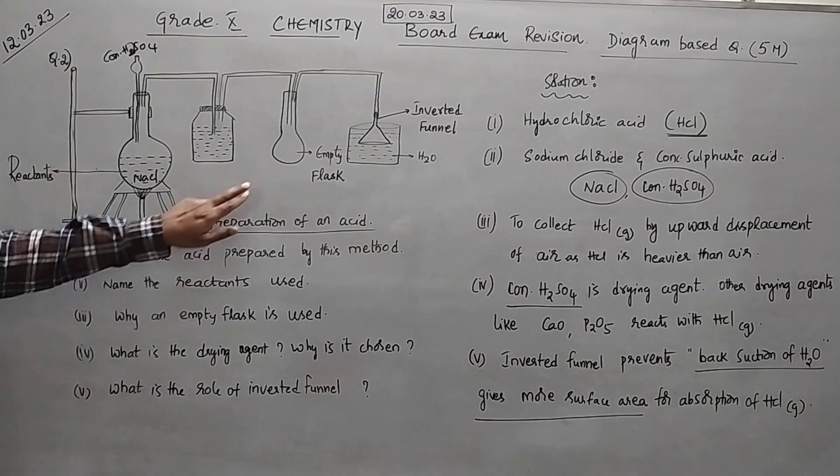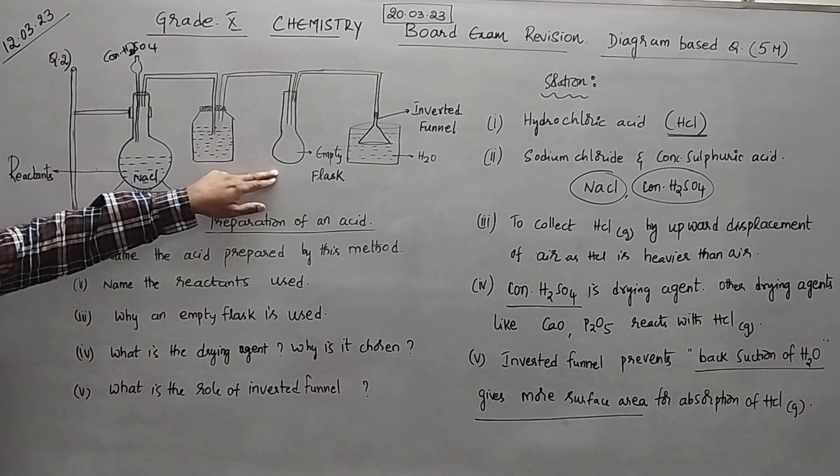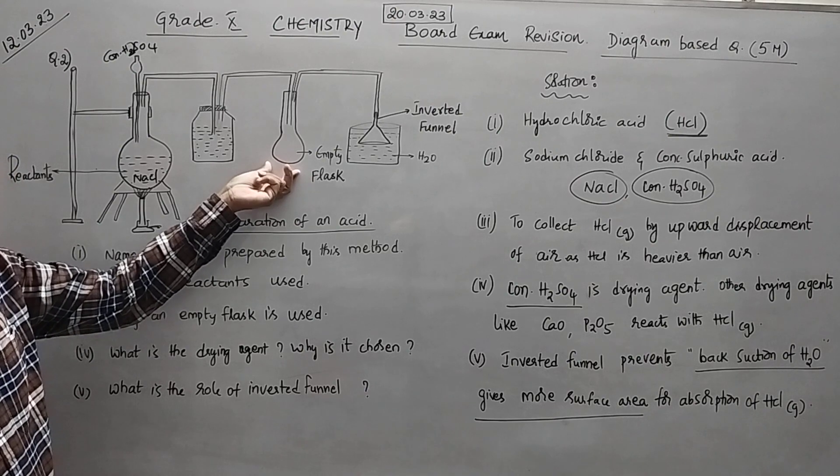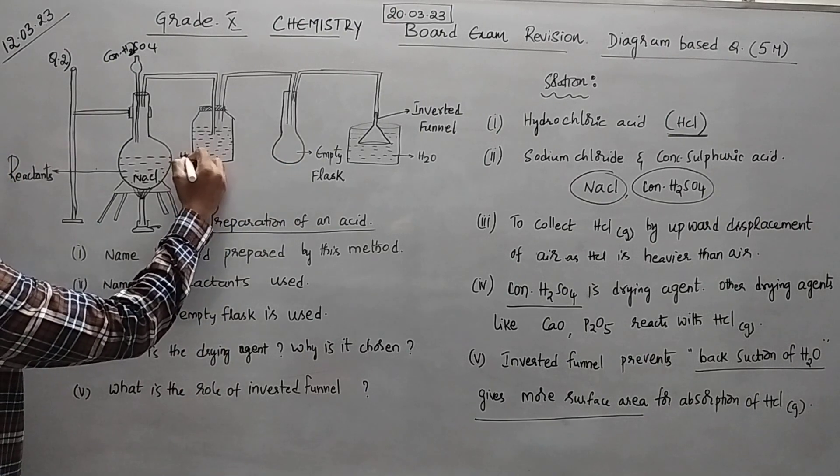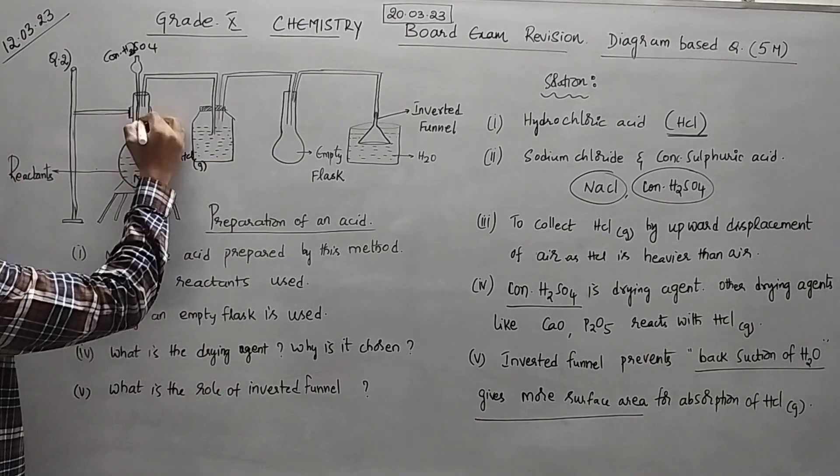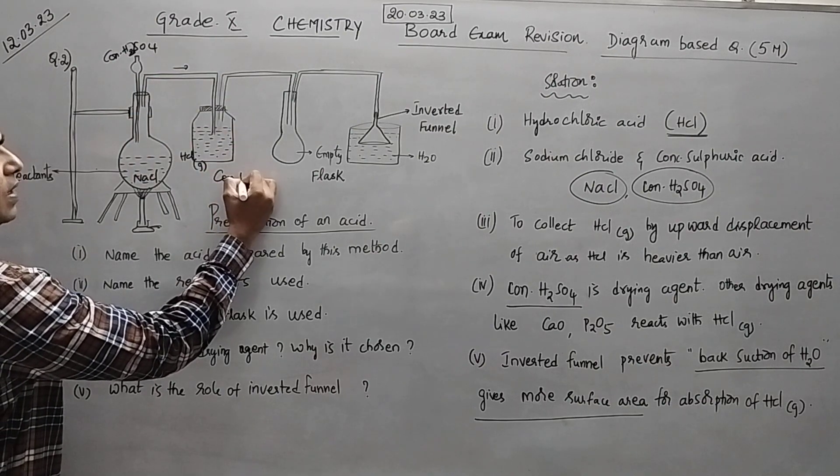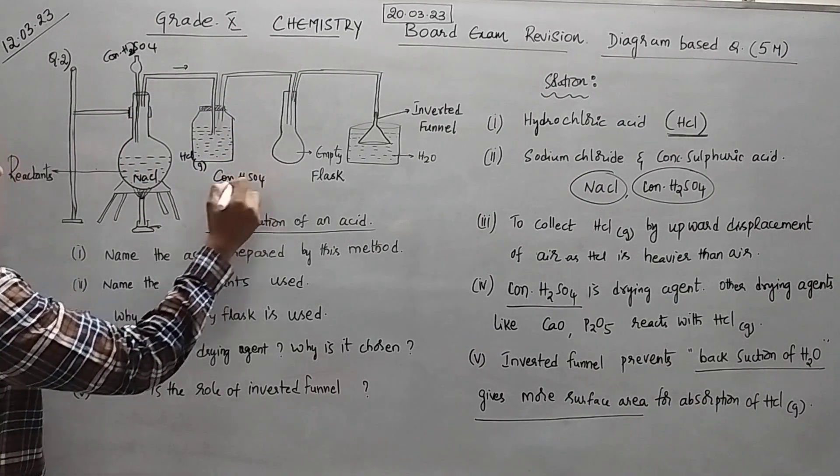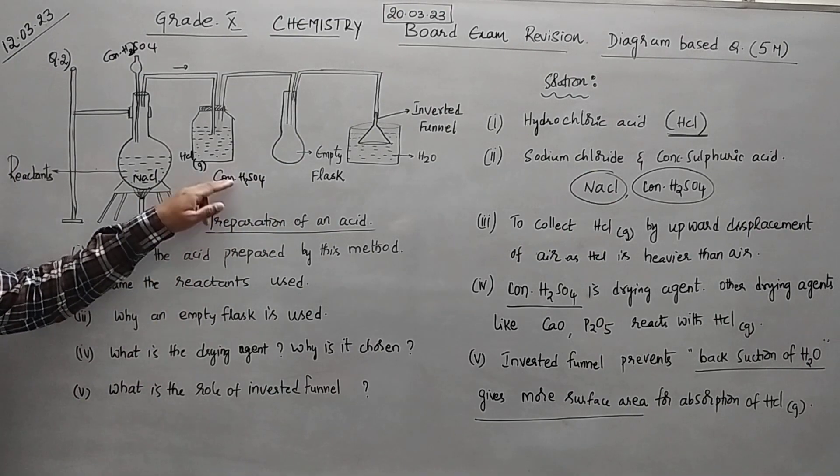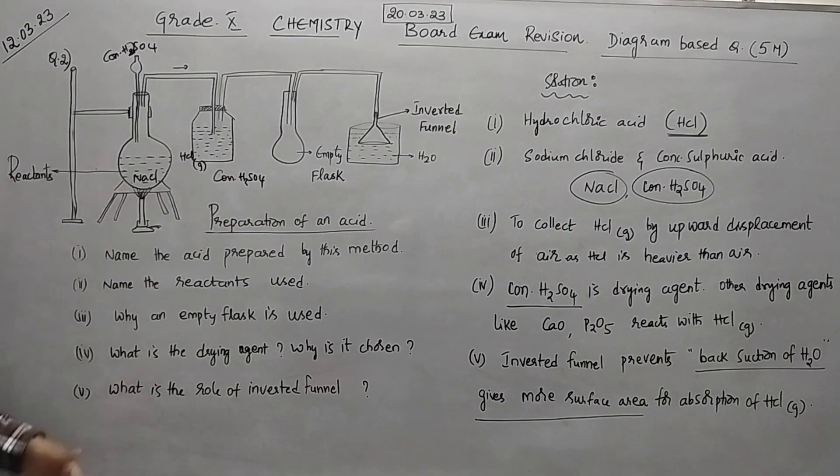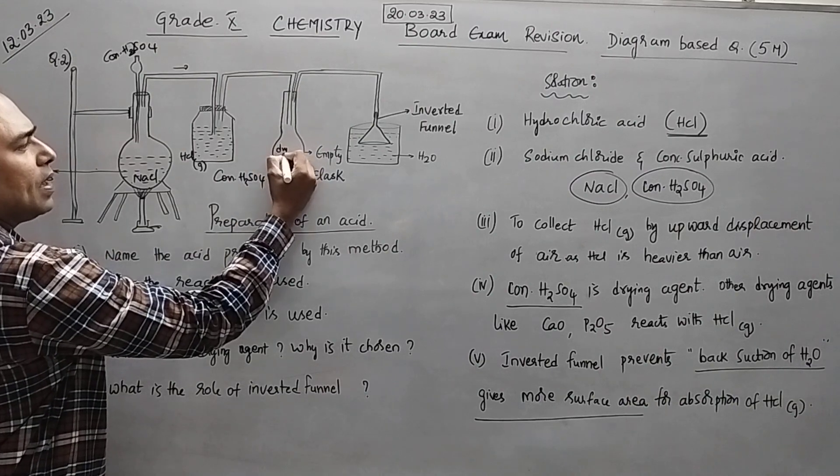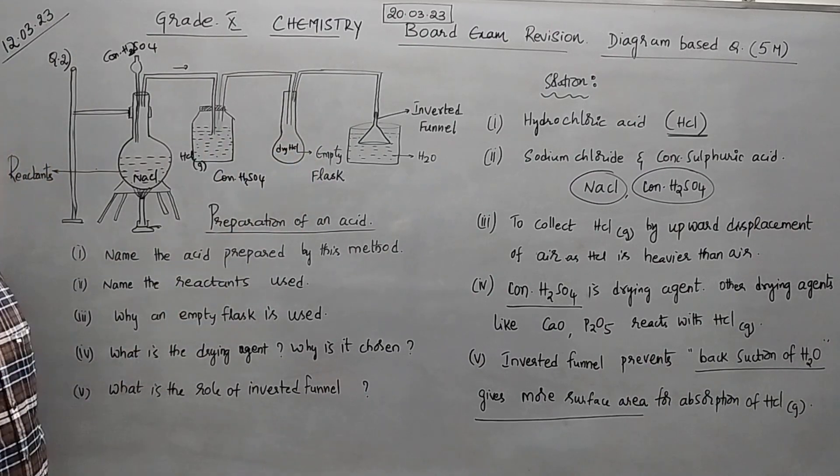Third question. You are using an empty flask here. What is the reason? Empty flask we are using so that when HCl gas is prepared it will pass through this and here concentrated H2SO4 is there. It will act as a drying agent. So any moisture is there it will trap that and now this dry HCl gas is collected here.